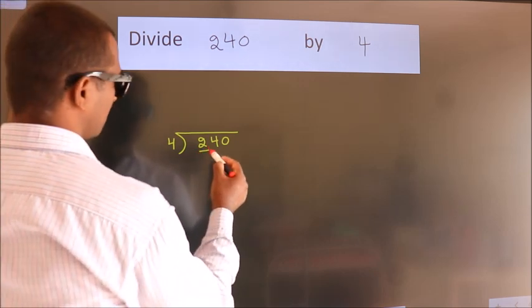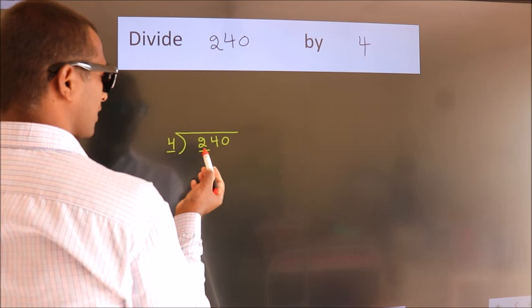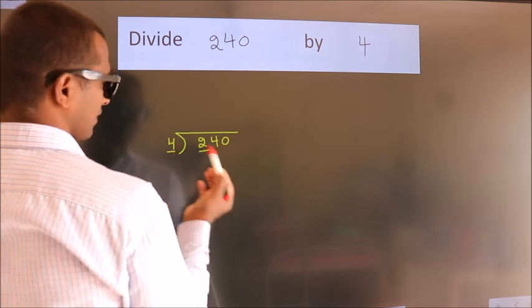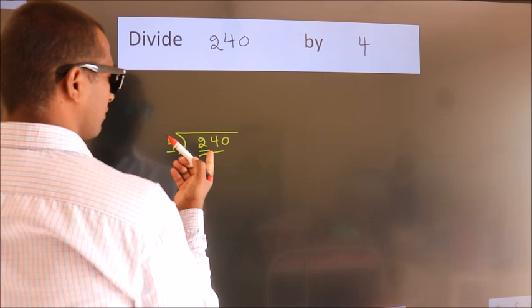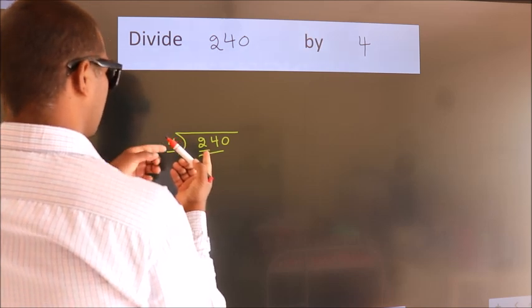Here we have 2. Here 4. 2 smaller than 4. So we should take 2 numbers. 24. When do we get 24? In 4 table.